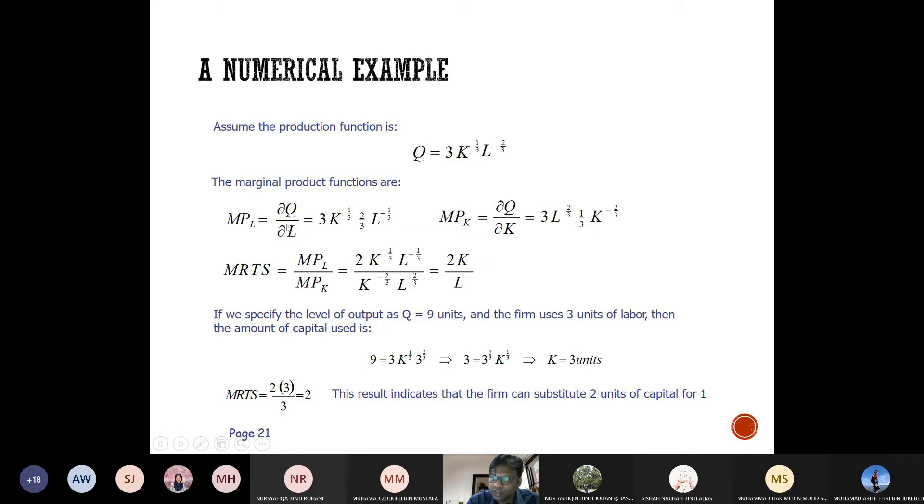You need to differentiate with respect to L only, not K. So it's 3K^(1/3) times - bring the two-thirds in front of L - so it becomes (2/3)L^(-1/3). It's very simple calculus, I'm sure you all know that.